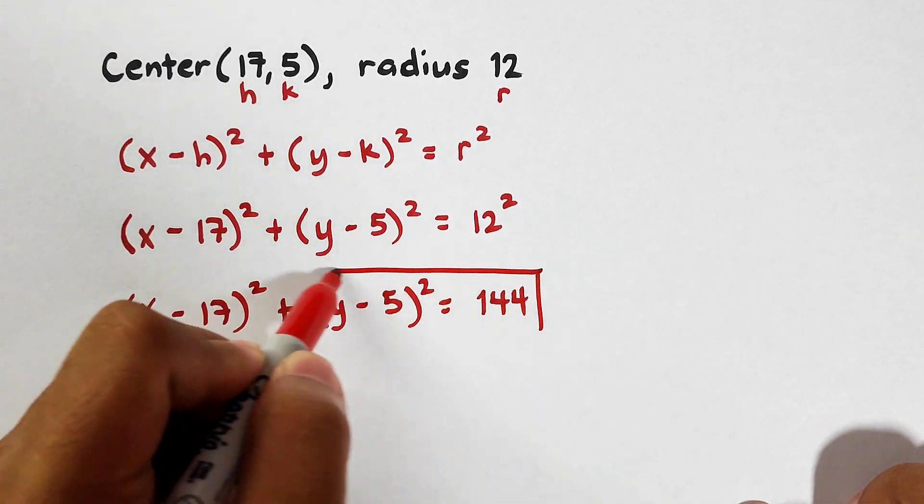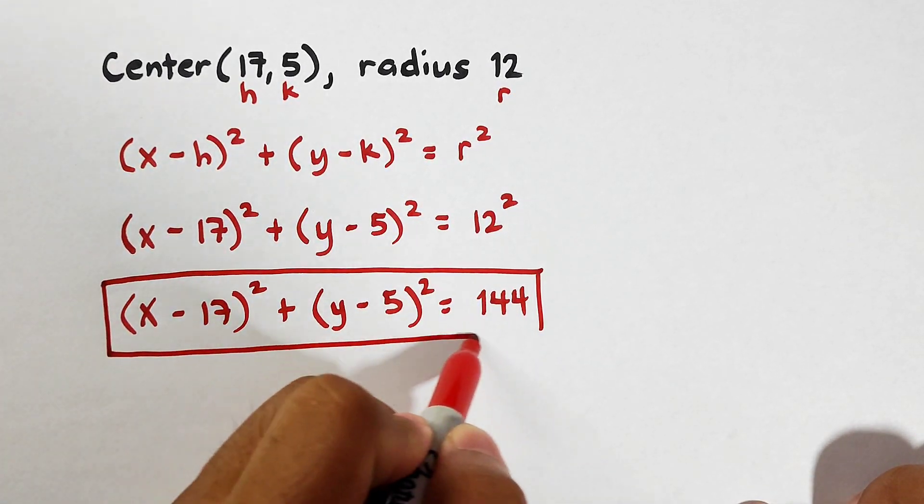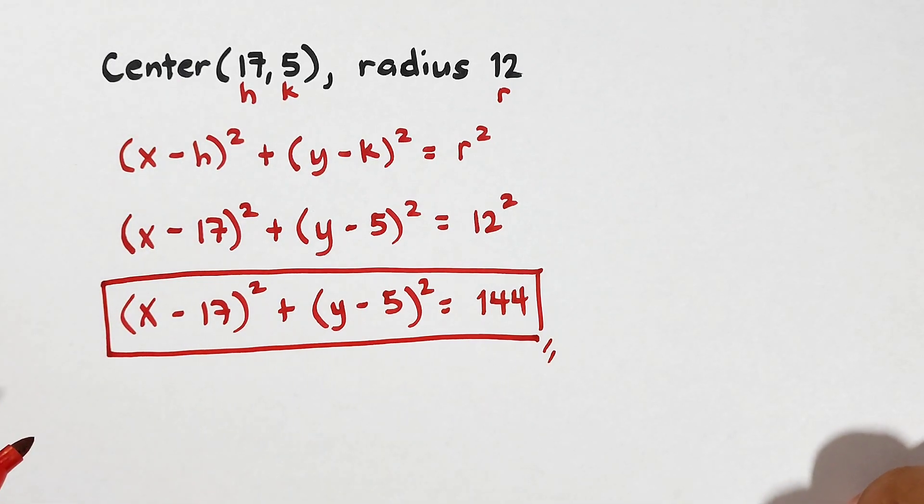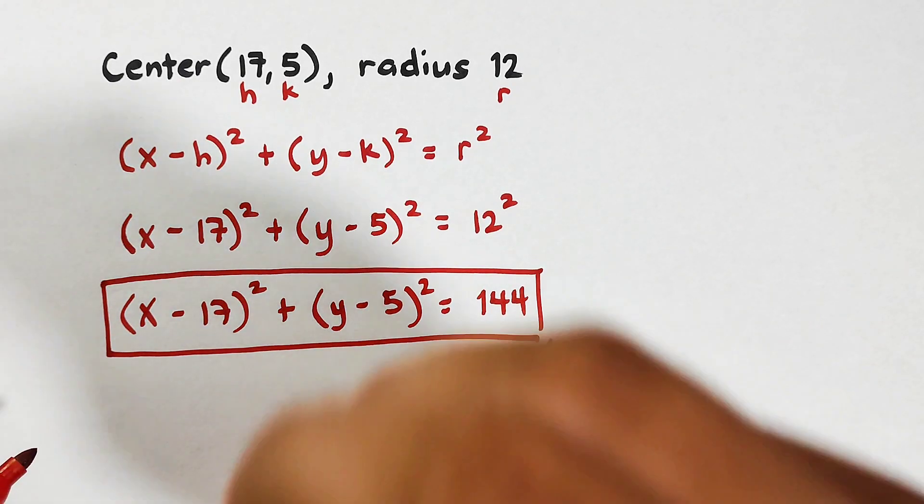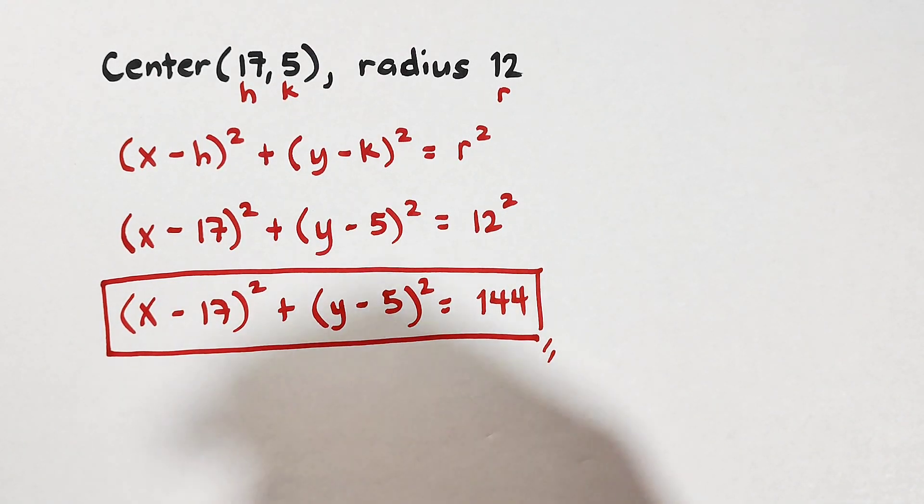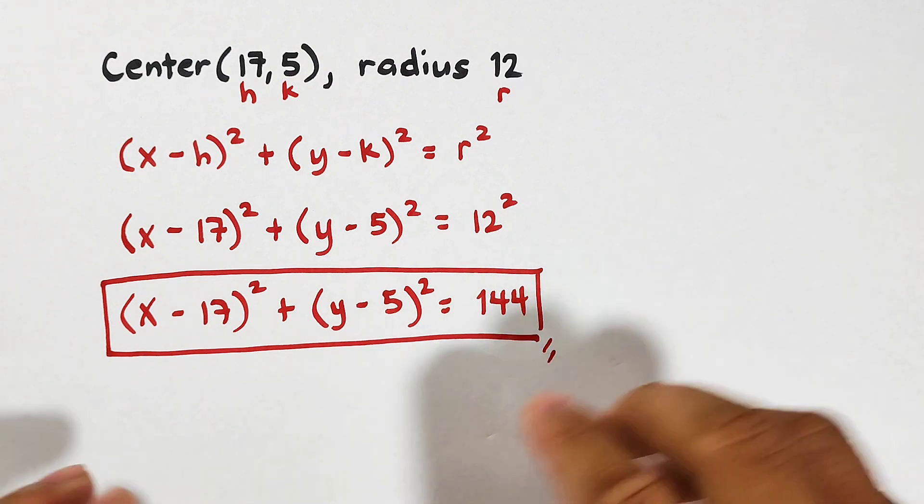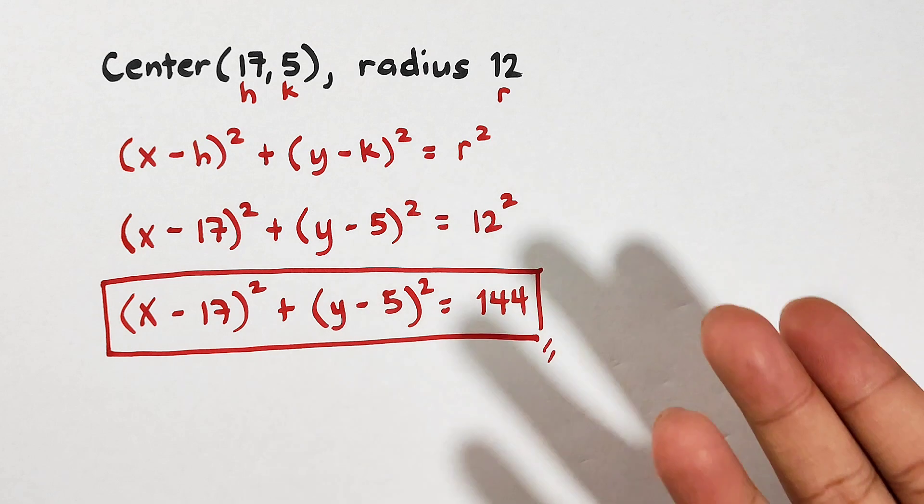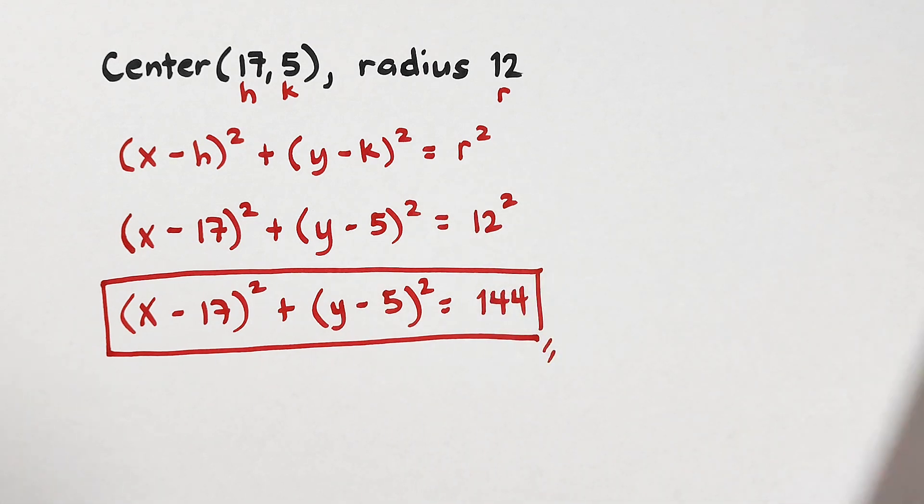And this is now the equation of the circle with the center of 17, 5, radius of 12 in center radius form. So if your teacher will ask you about the general form, you can expand this one. And for sure you can do it. Now let's move on.